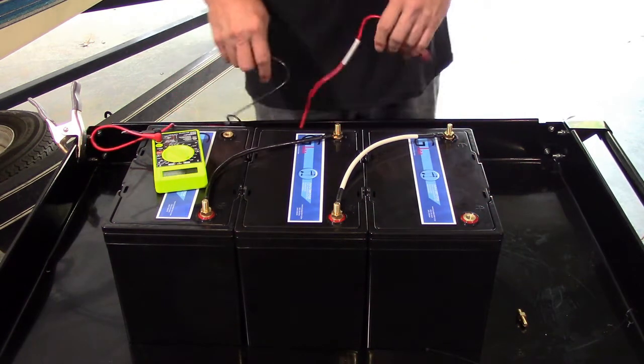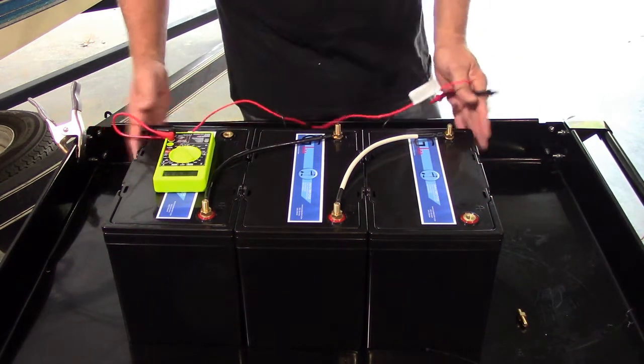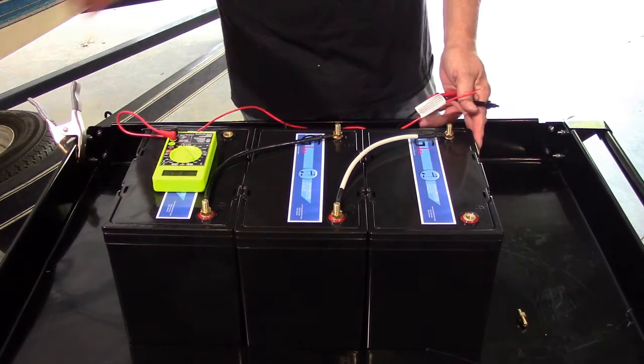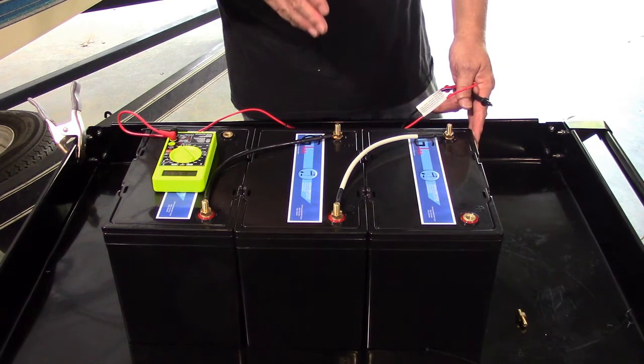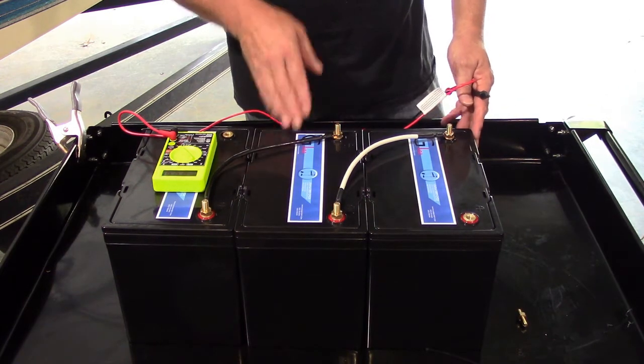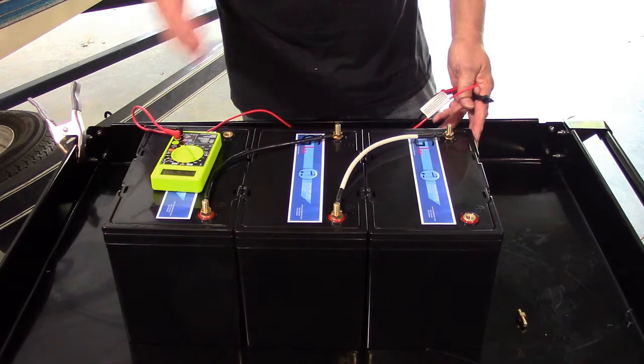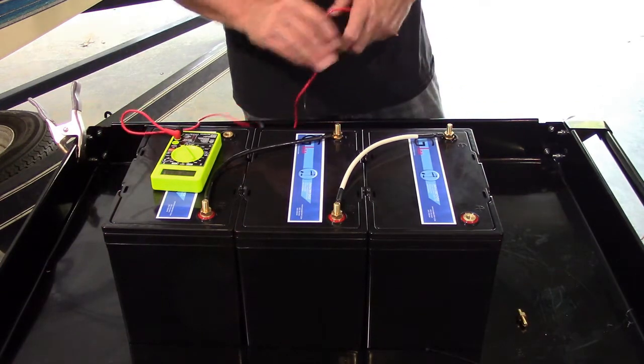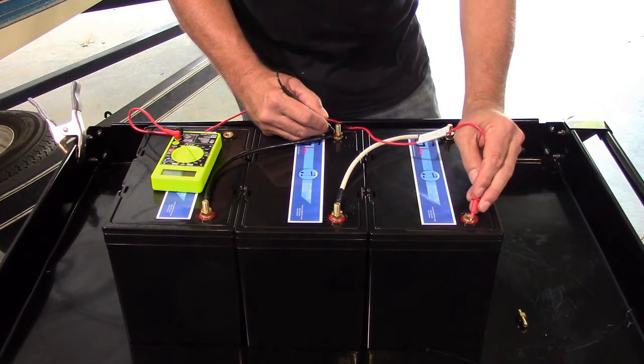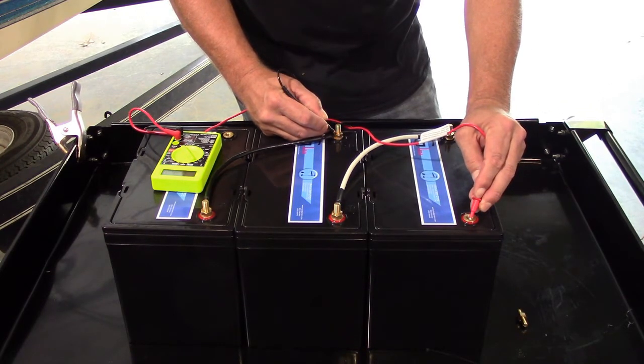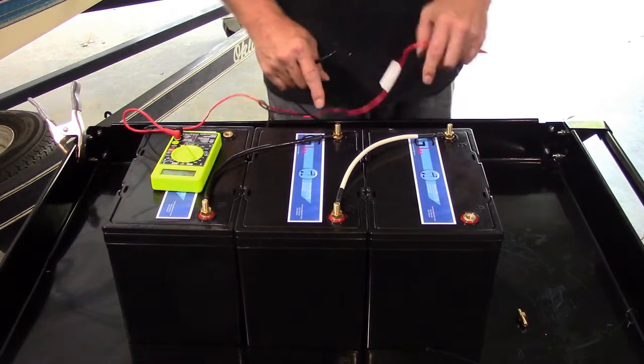So now you've got a 36-volt system here. This guy's going to want to run his LiveScope. Your maximum recommended voltage going into your LiveScope unit is 31 volts. So how do we do this with a 36-volt system? We're going to pull off 24 volts right here, just like we did on our 24-volt system. So that's 26.3 volts right there.